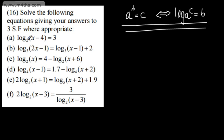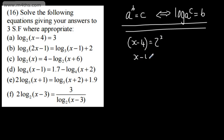So 3 is the power 2 is raised by to give me x minus 4. So x minus 4 is going to be 2 to the power of 3. A is 2, C is x minus 4, and B is 3, so A to the power of B equals C. Therefore x minus 4 equals 8, and adding 4 to both sides, x is 12. If we sub this in: 12 minus 4 is 8, and 2 to the power of 3 is 8, so the answer is 3. Nice and straightforward.